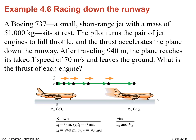A small short-range jet with a mass of 51,000 kilograms is at rest. The pilot turns both jet engines to full throttle. After 940 meters, the plane reaches its takeoff speed of 70 meters per second and leaves the ground. What is the thrust of each engine? Remember, when you find the total thrust force, you divide by two to get each engine's thrust.